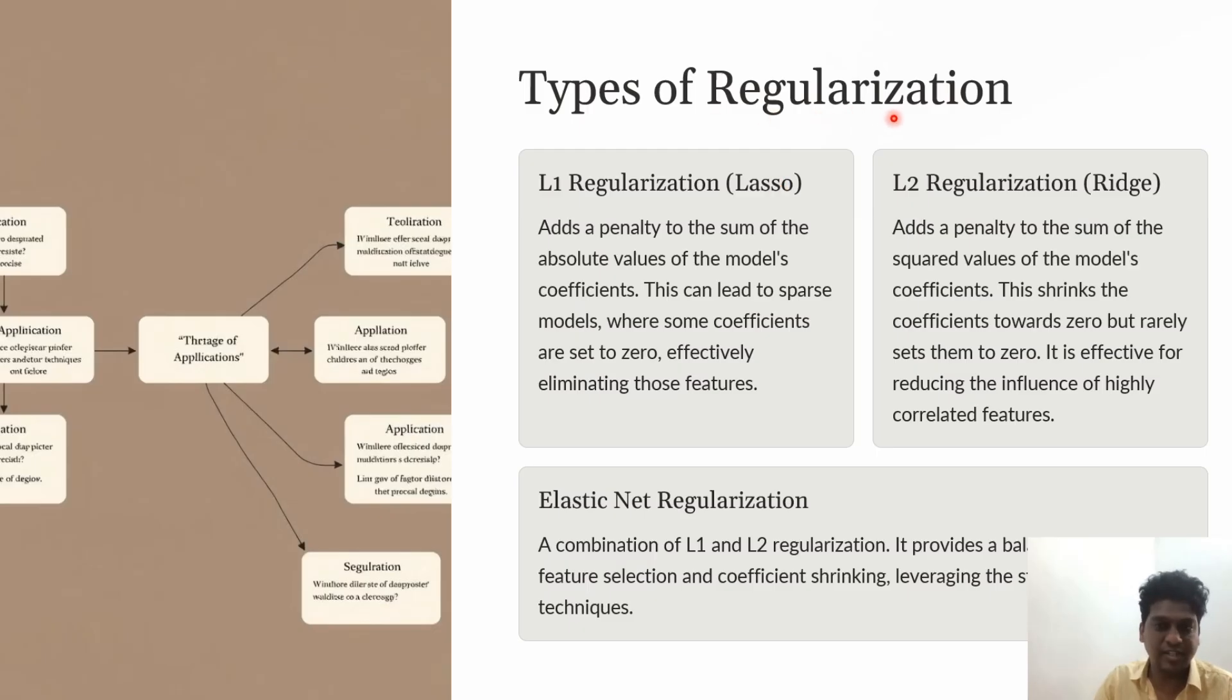There are various types of regularization: L1 regularization, called Lasso; L2 regularization, called Ridge; and Elastic Net regularization, which is a combination of both L1 and L2.